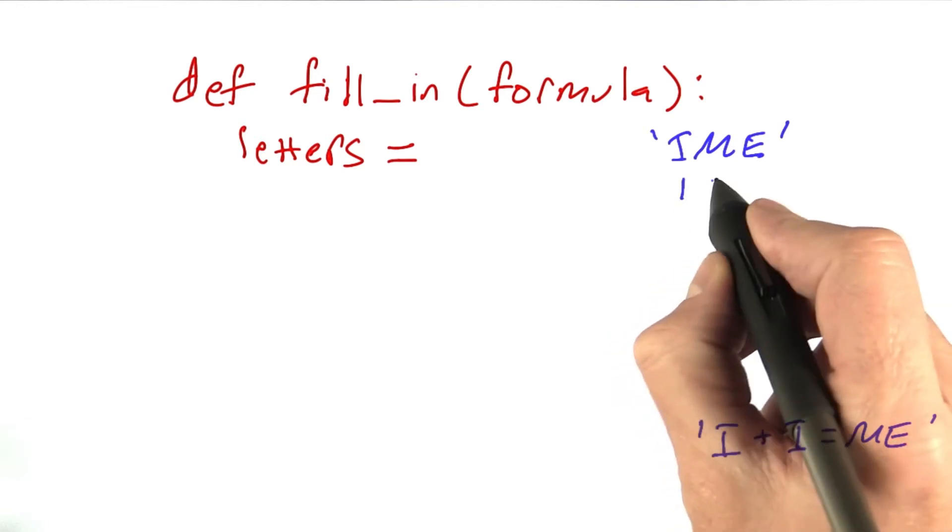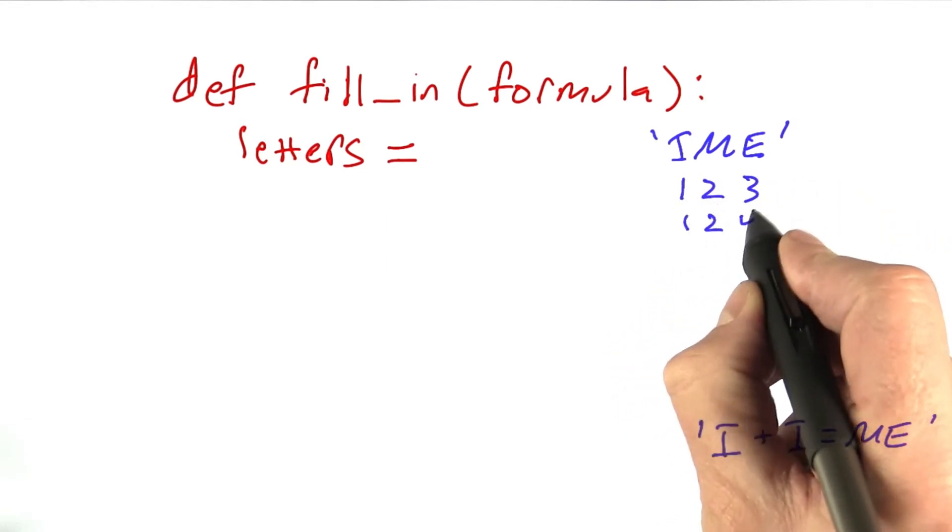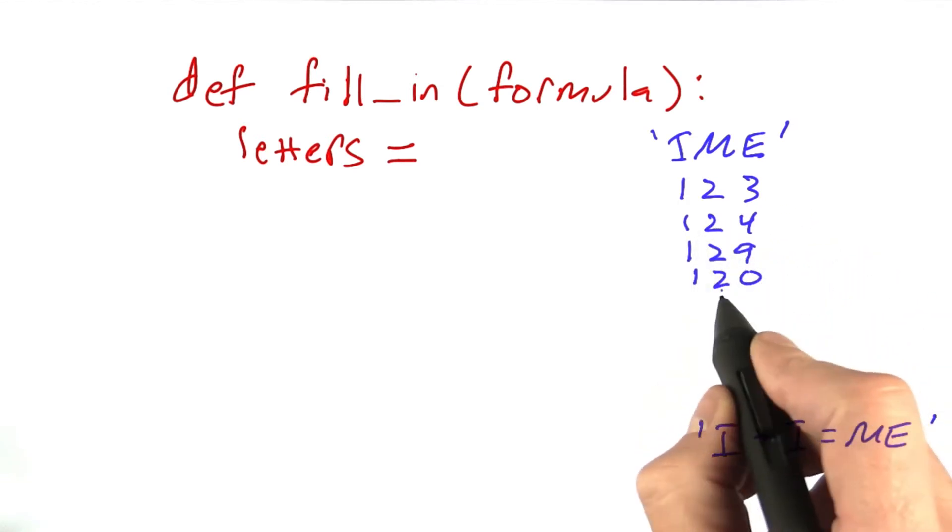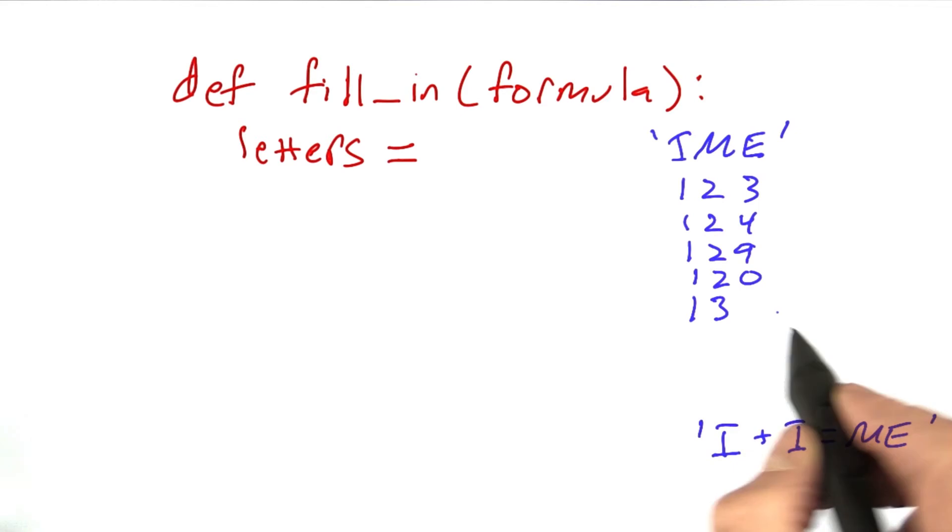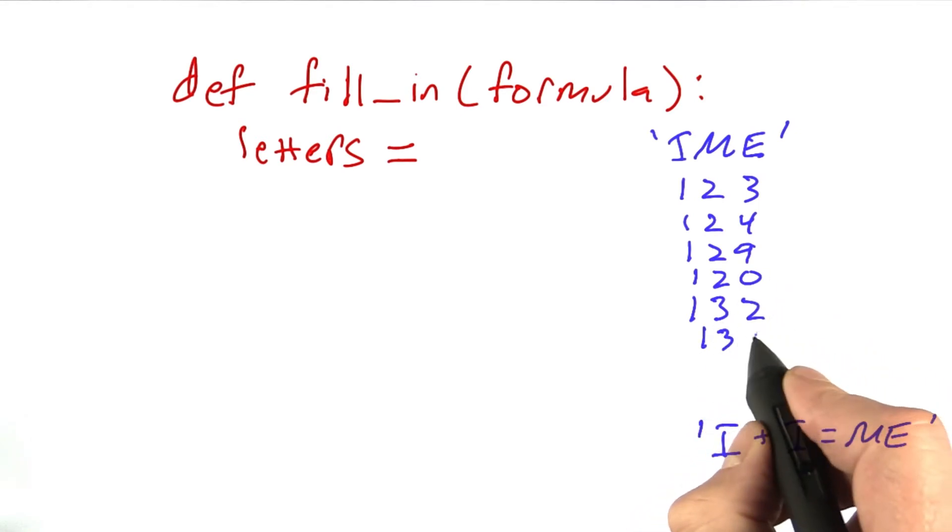And so maybe we'll start with 1, 2, 3, then 1, 2, 4, and so on. 1, 2, 0, and then 1, 3. And we wouldn't do 1, 3, 1 because we already have a 1 there. So 1, 3, 2, 1, 3. We can't do 1, 3, 3, so 1, 3, 4, and so on and so on. We just have all these possibilities.